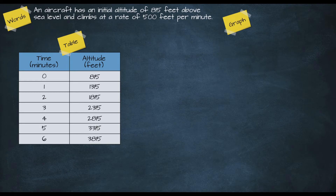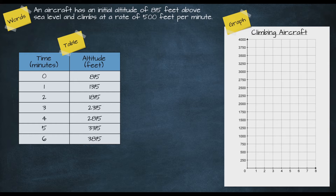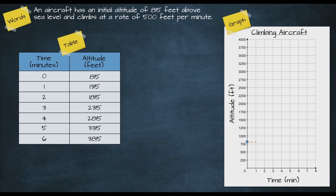Now let's take a look at a graphical representation. We'll label the vertical axis — our dependent variable — 'altitude,' and the horizontal axis — our independent variable — 'time.' Our initial altitude is 815 feet, so at time zero we plot a point at 815 feet on the vertical axis. For each subsequent point, we move right one minute and up 500 feet — on this graph that corresponds to over one square and up two squares.